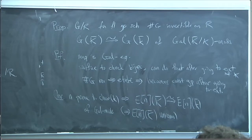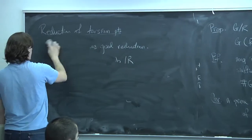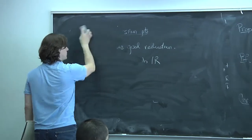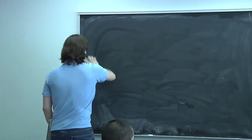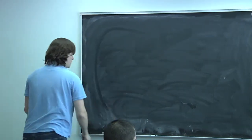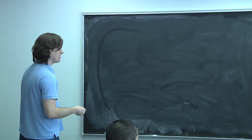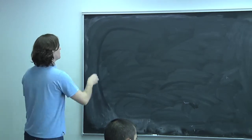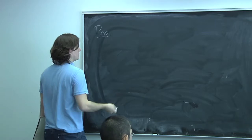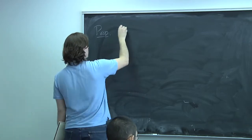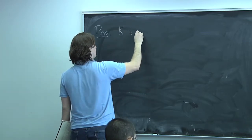There's a more interesting statement when N is not assumed to be prime to the residue characteristic. For simplicity, let me assume K is an extension of Q_p, and e < p - 1, where e is the ramification index. And G is a finite flat group scheme over R.